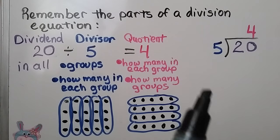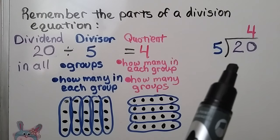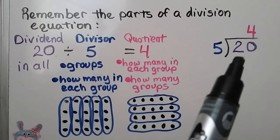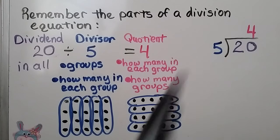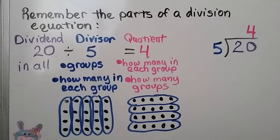If our division equation is written in this format, this is our dividend, this is our divisor, and our quotient is up here.